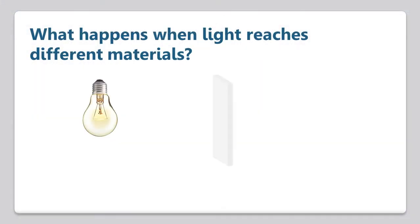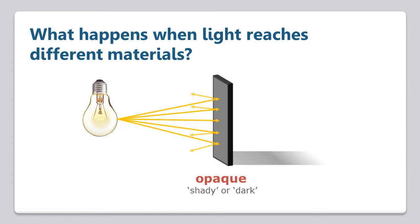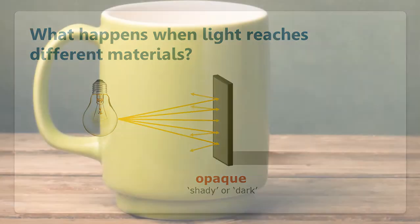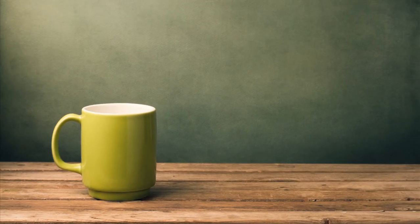Many materials block light altogether. As light strikes the surface, it is either absorbed or reflected back. We will look at this in more detail in a later lesson, but for now just know that we call these materials opaque. Opaque means shady or dark, because we can't see through these materials — they are the ones that block light and cast shadows. There are many different types of opaque materials. For example, a ceramic mug sitting on a wood desk in front of a painted wall — we can't see behind any of these objects, so they are all considered opaque.